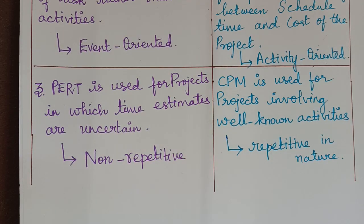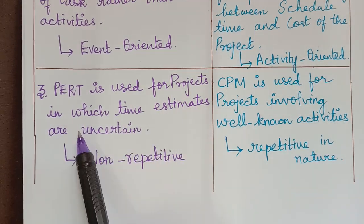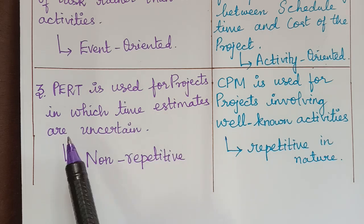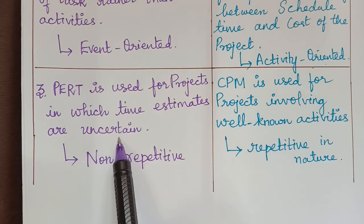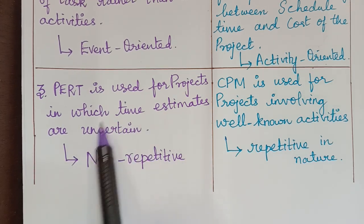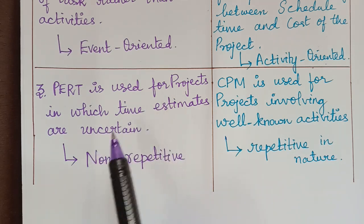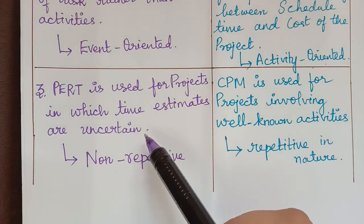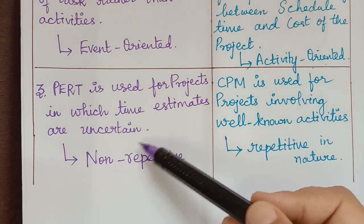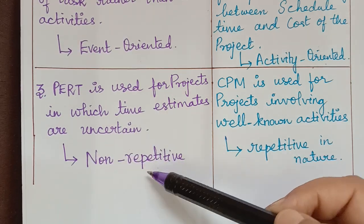The third difference is: PERT is used for projects in which time estimates are uncertain — for example, in research and development projects, where time estimates are usually uncertain. These projects are also non-repetitive in nature.